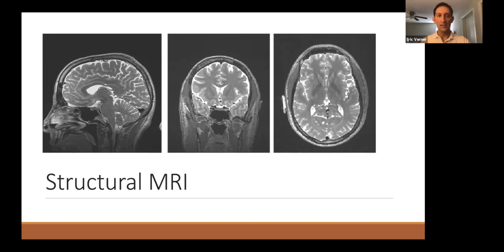Here you can see a structural MRI image. We're interested in the gray matter — the neurons and cell bodies — the white matter, which is the connections between neurons, and other tissue like CSF, the cerebral spinal fluid. Mostly it's the gray matter and the white matter that we focus on.